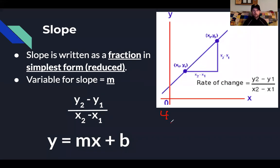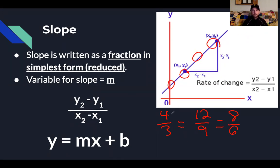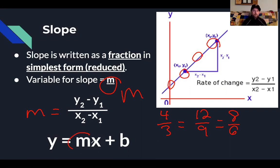Slope is written as a fraction in simplest form, meaning you've reduced that fraction. If my slope has a rise of 4 and a run of 3, that's the same as going up 12 units and over 9, or up 8 and over 6 — all saying the same thing. The variable we use for slope throughout pre-algebra, algebra, and calculus is m. So m equals y2 minus y1 over x2 minus x1. The variable we will always use for slope is m.